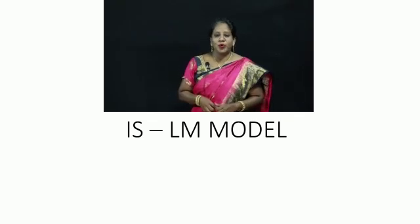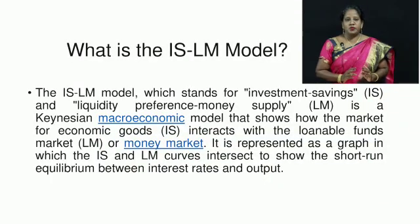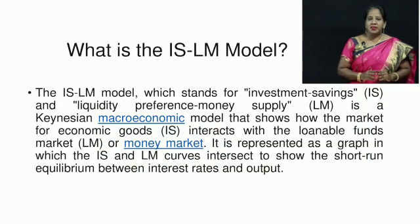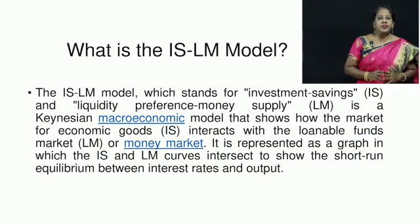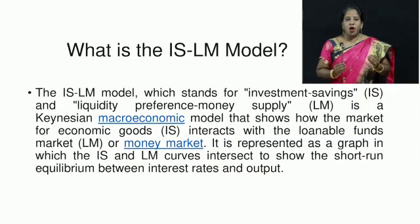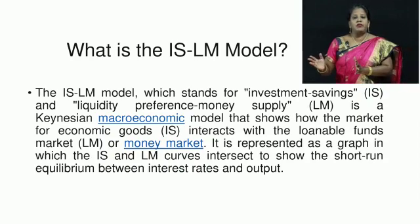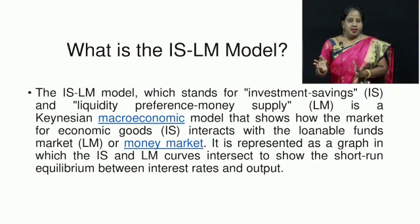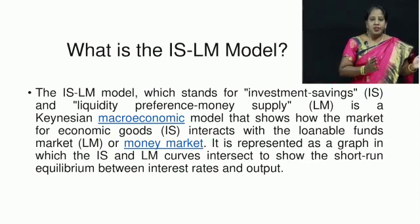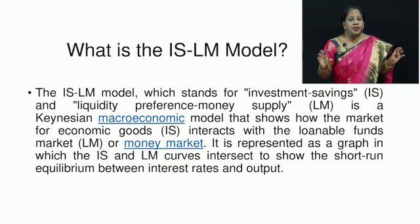Hi students, I'm going to talk about the IS-LM model. We're going to learn what IS and LM stand for. IS stands for Investment Savings and LM stands for Liquidity Preference Money Supply. This is a Keynesian macroeconomic model that shows how the market for economic goods (IS) interacts with the loanable funds market or money market (LM). It is represented as a graph in which the IS and LM curves intersect to show the short-term equilibrium between interest rate and output.